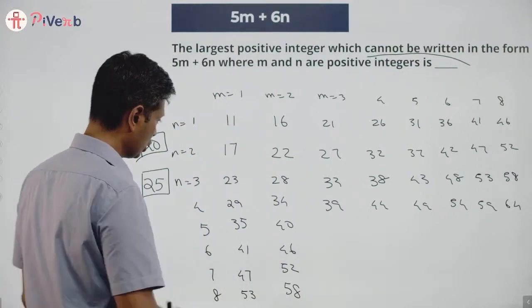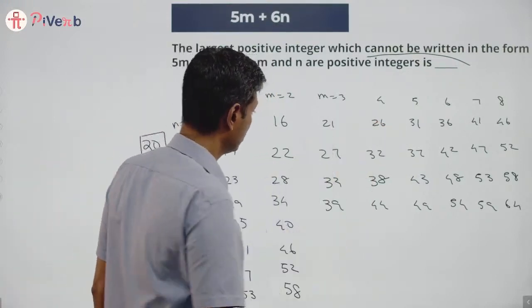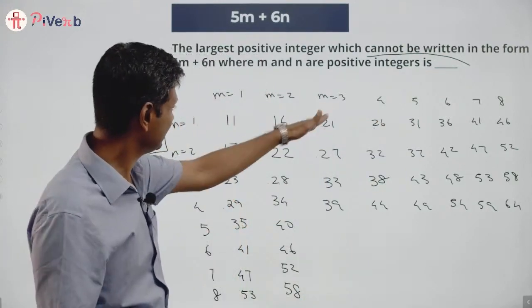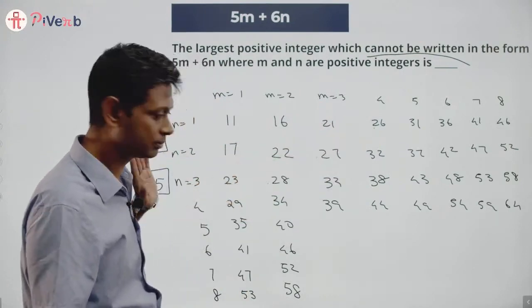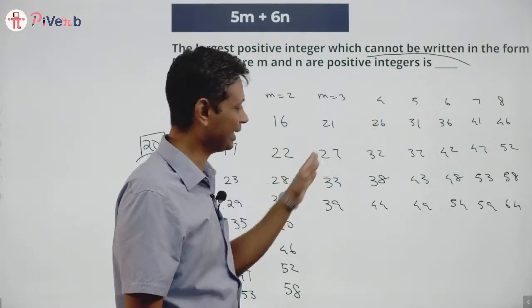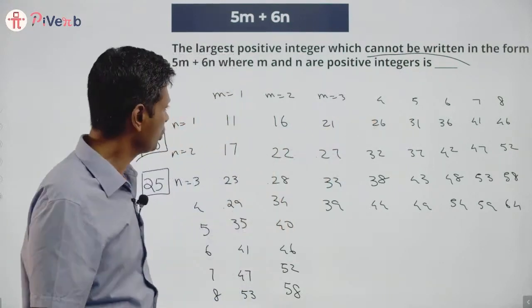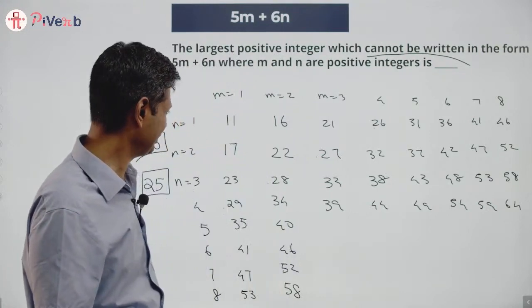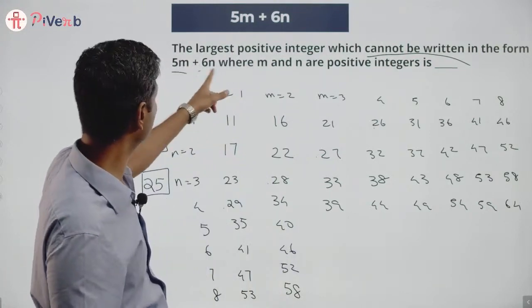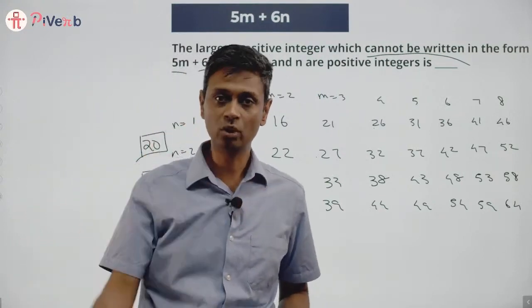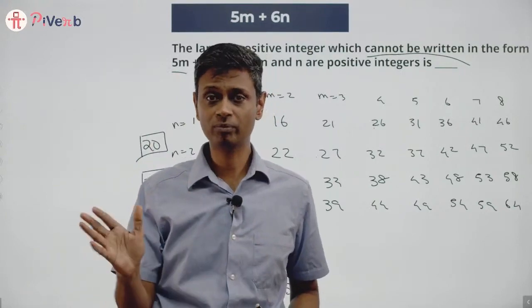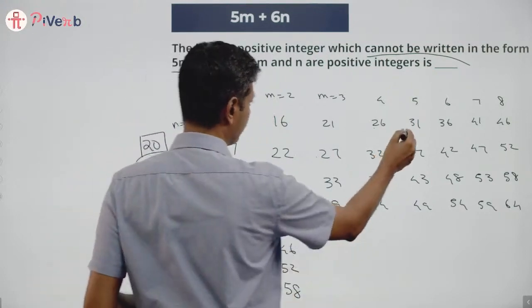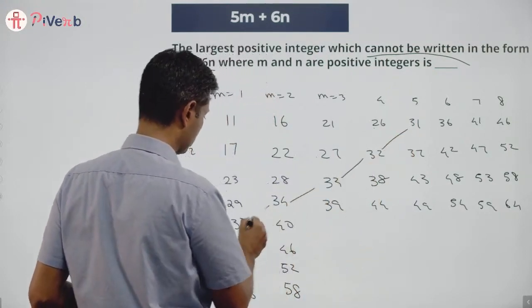26, 27, 28, 29 are all achievable — each step is effectively removing a 5 and adding a 6. But 30 is not possible: 30 = 5×6 requires m=6,n=0, or 30 = 6×5 requires m=0,n=5 — either way one of them is zero, not a positive integer. So 30 is not achievable. However, 31, 32, 33, 34, 35 are all possible.